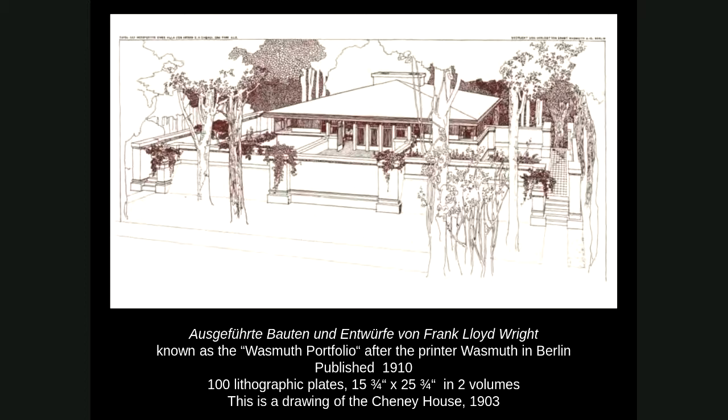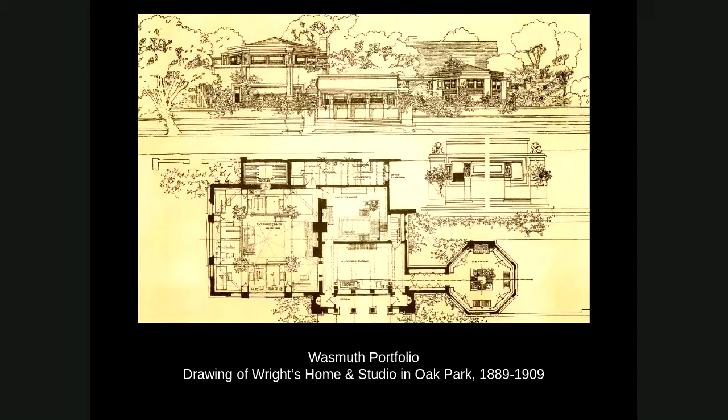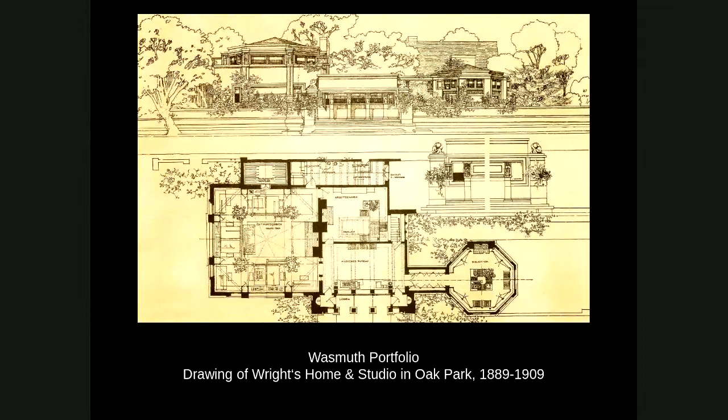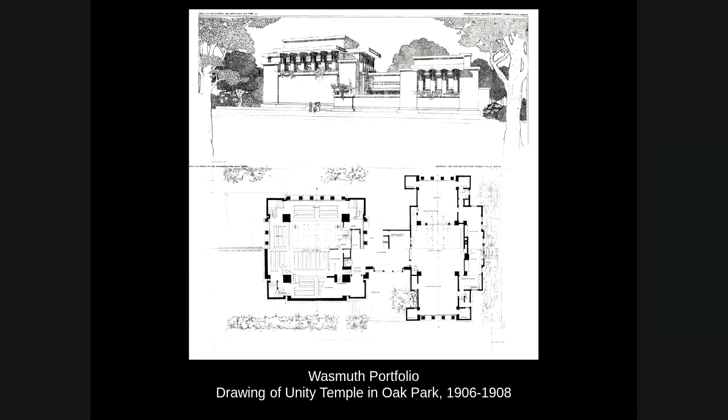Taliesin is really an amazing place for those who have not been there. Here is the typical type of Wasmuth print of the Cheney house. There were a hundred plates in the portfolio. Here is the one for Wright's home and studio, showing the front of the studio along Chicago Avenue, and you can see the floor plan. This really shows his work very clearly — the floor plans and the renderings.